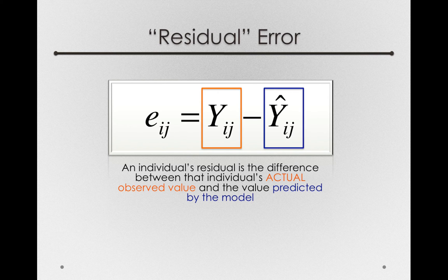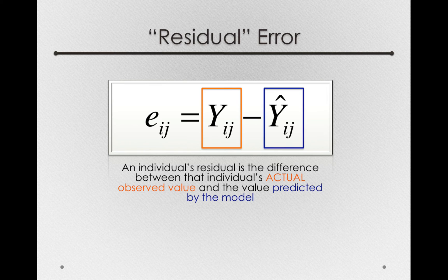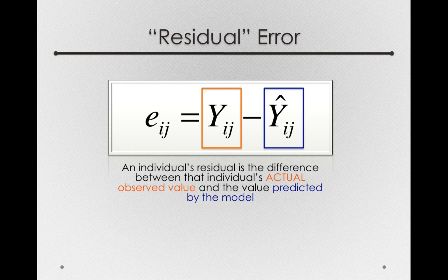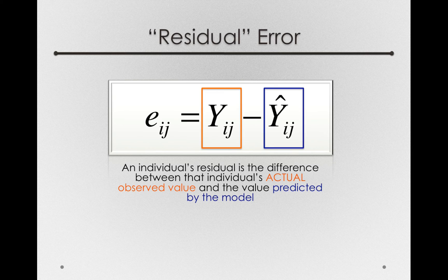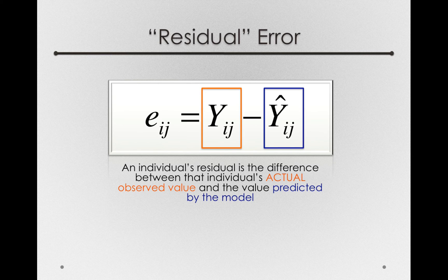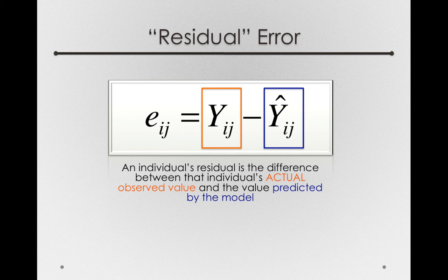Now the Y hat ij is probably a new term for you. The hat simply means a predicted value. And let's remember what's predicted for any individual. Again, let's take Tom. Tom was a member of the Delta group. He flew on Delta Airlines. And so what we would predict for Tom, knowing nothing else, would be simply the mean of the Delta group.